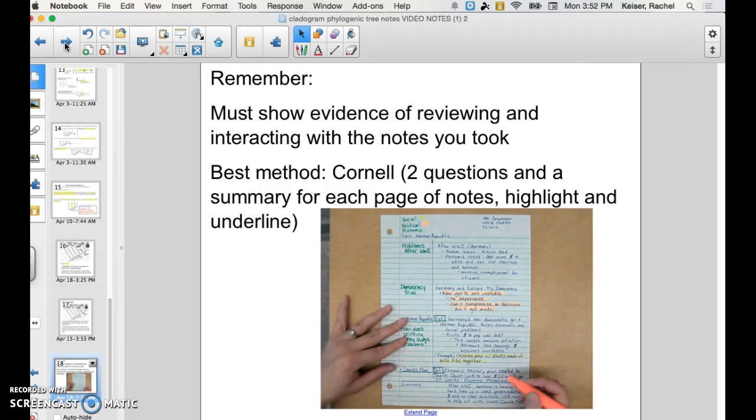Now remember, you have to show evidence that you have interacted with your notes and that you've gone back and reviewed. So the best method to do this, the easiest way to do this, is Cornell style. Where you come up with two questions and a summary for each page of notes that you took. Highlight, do some underlining, show me that you've interacted and you've went back and reviewed these notes.